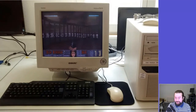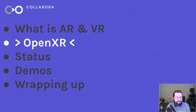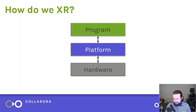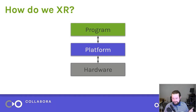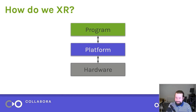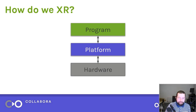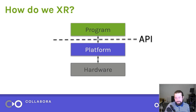So that was quick about what AR and VR is. Now I'm going to talk about OpenXR. So how do we do VR or AR — or XR as they're both commonly known together? You have your program, you have a software platform that sits in between, and then you have your hardware that the platform talks to. So you have your drivers and all that stuff, and examples of platforms are Oculus Quest or SteamVR. Between the program and the platform, there's an API.